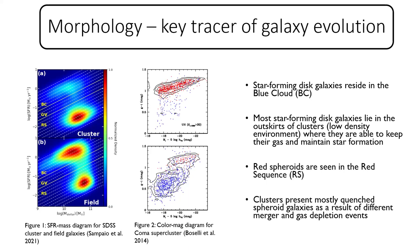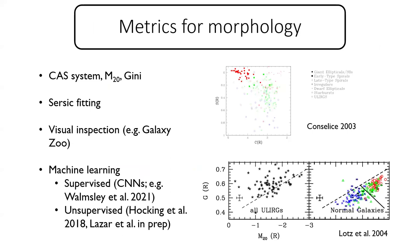The quenched state is linked to different merger and gas depletion events across their life histories. There are of course exceptions: blue ellipticals and massive red spirals do not fall neatly into this segregation, and I'll be discussing those throughout my presentation. Now, what are the main morphological metrics we use in the literature when looking at images? I want to bring into discussion non-parametric methods such as concentration, asymmetry, smoothness, M20, and Gini, which form the basis of the structural analysis in the paper I'm presenting today.